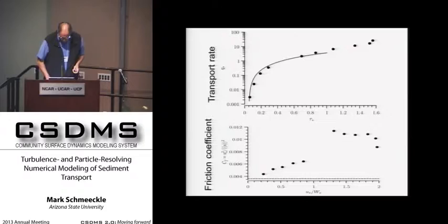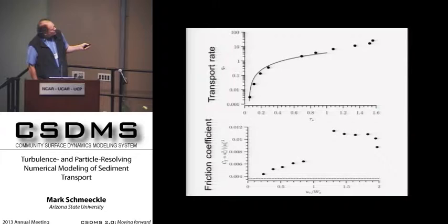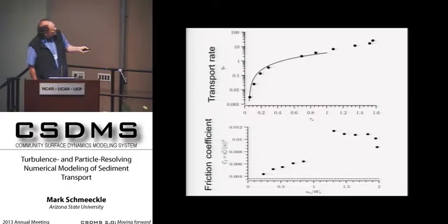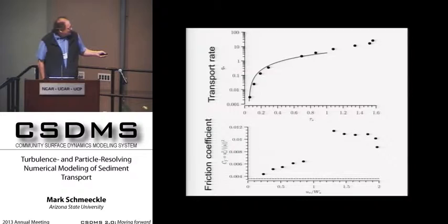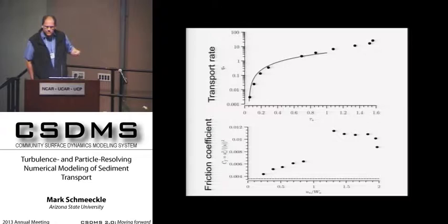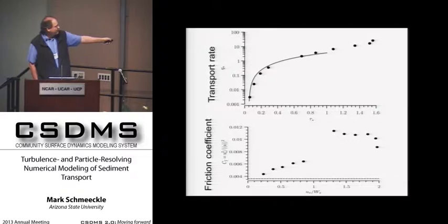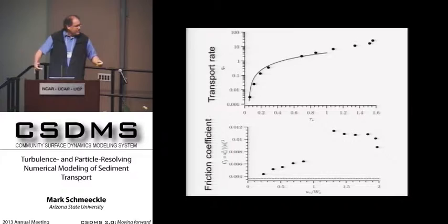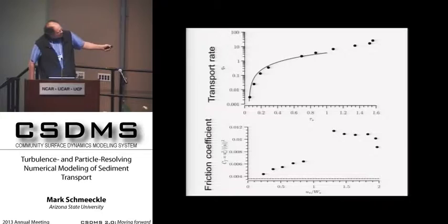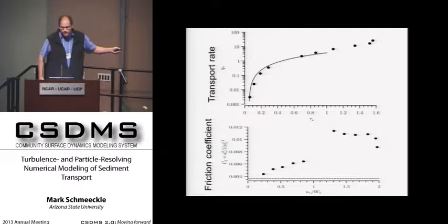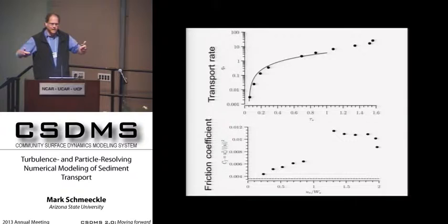We can extract things like the Meyer-Peter Müller equation for bedload transport, then see transport increasing into the suspended sediment regime well above that equation. We can also look at friction coefficients — starting from a no-sediment baseline using Nikuradse roughness values, friction increases as more particles move. You get a dramatic rise entering the suspended sediment regime, then as stratification increases the friction coefficient actually starts going down again. The suspended sediment simulation is directly calculating the effect of stratification on the turbulence.